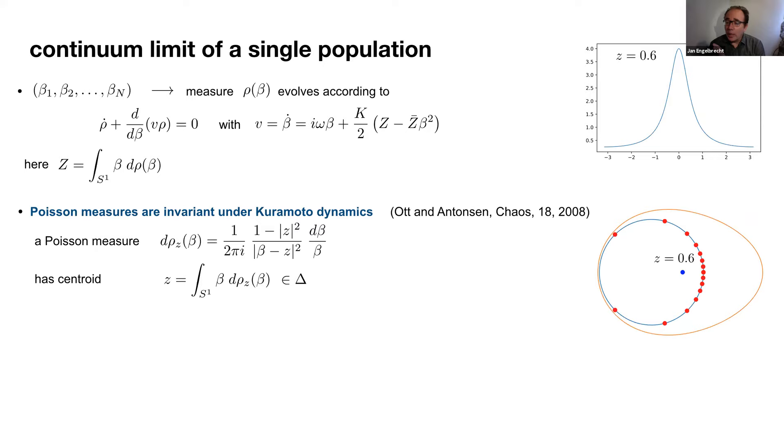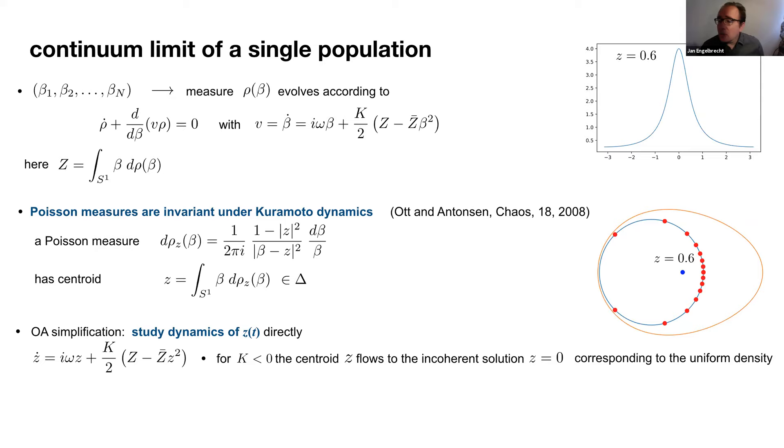It's useful to interpret this analysis in looking for the dynamics for negative k, which typically flows to an incoherent state. If I have the single population, it's straightforward to analyze. For negative k, the centroid z will flow to the origin z equal to 0, which is a uniform density.